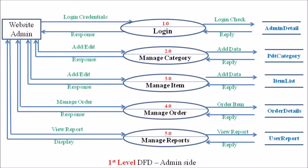The second process is manage category. Here the website admin can add, edit, or remove different categories of products available on the website. For example, if a new category is introduced, the admin can add or edit it. When adding or editing, the product category database is updated based on the activity done by the admin.